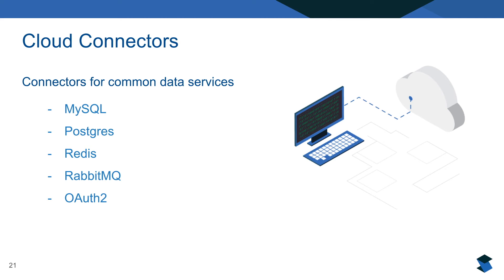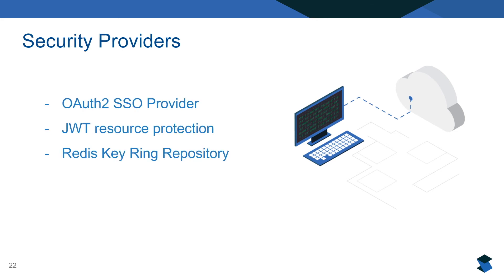SteelToe also includes cloud connectors to make building applications that leverage databases really easy — MySQL, Postgres, Redis, RabbitMQ for message queuing, and OAuth for security. We've also got security providers that go deeper: a single sign-on provider leveraging OAuth 2, support for accessing REST APIs protected with JWT tokens, and a cloud version of a keyring repository that stores keys in Redis instead of the local file system.